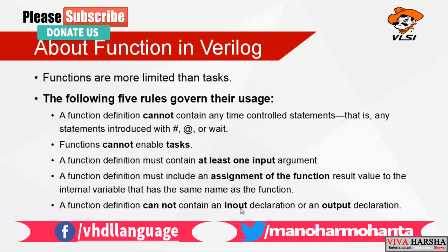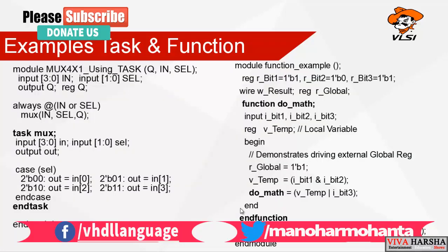Let us look at examples. In the task example, I am implementing a 4-to-1 mux. The output is q, the input is a 4-bit bus 'in', and the selection line is 2 bits. Output is declared as a register. You can see 'always @' is used — behavioral level modeling is implemented in the task.